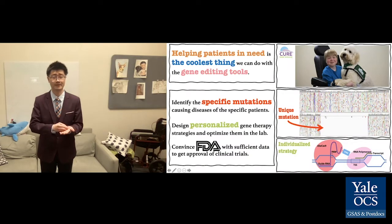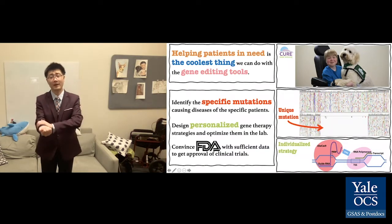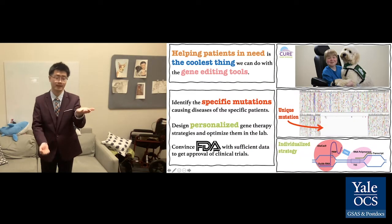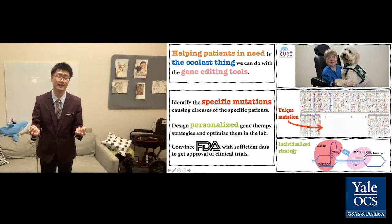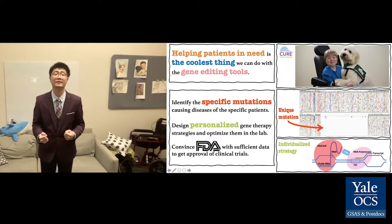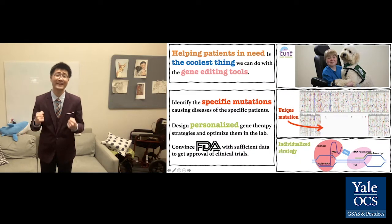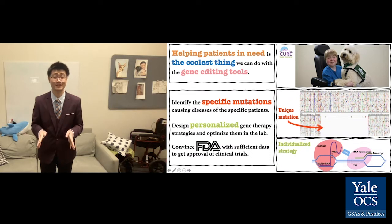To help specific patients, we get biopsy samples from the patients, extract the DNA, and use deep sequencing technology to accurately identify the mutation a patient has. For example, as shown in the figure in the middle, the blank represents a deletion in the patient's gene. We can accurately know the types of mutations we're dealing with, which allows us to design personalized therapies accordingly.